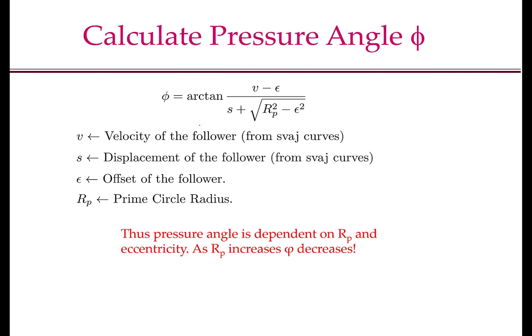For a given angle of the camshaft, the pressure angle is given by the arctangent of (V minus epsilon) divided by (S plus the square root of Rp squared minus epsilon squared). V and S are the velocity and displacement of the follower obtained from the SVAJ curves, where velocity is in units of length per radian. Epsilon is the offset of the follower and Rp is the prime circle radius — for a knife edge follower, this should be read as the base circle radius. Once we have designed the displacement and velocity curves, the pressure angle depends on the prime circle radius and the eccentricity.